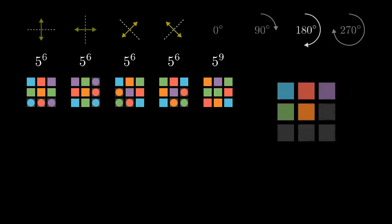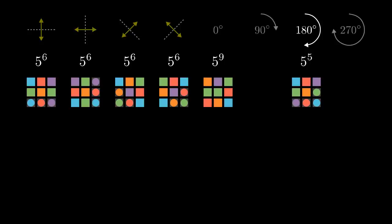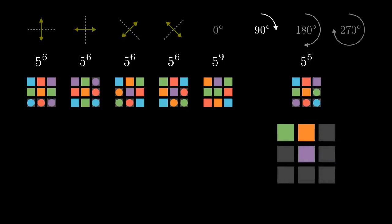And finally, pictures symmetrical under rotation by 90 degrees are fully determined by just these 3 squares. All the other squares are forced by the symmetry. So the number of pictures symmetrical under rotation by 90 degrees is 5 cubed.